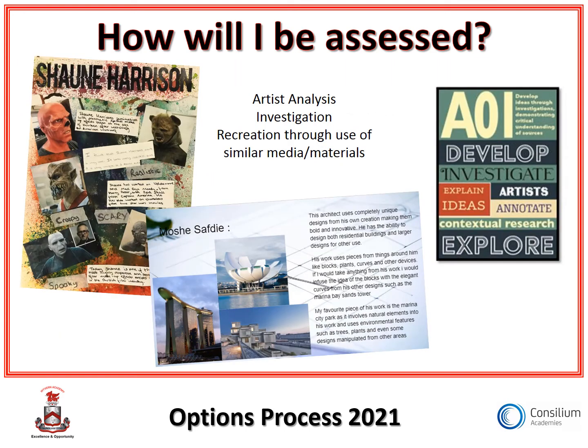Your assessment objectives are broken into four different ones. The first one is AO1, which is the development and investigation section. You will look at different artists or designers and start to investigate how they work, which materials they use, and you will also start to investigate through your own recreations of how they work. Annotations are also really important in this stage, so your literacy skills are involved, where you start to delve deep into trying to discover how and why they use the materials that they've chosen.